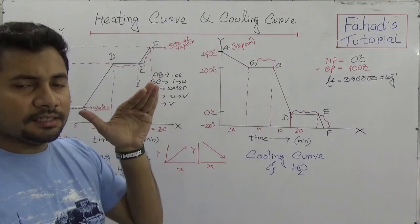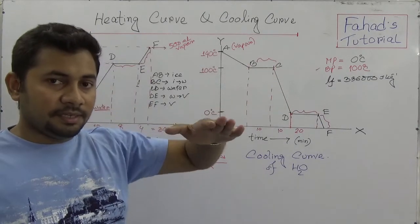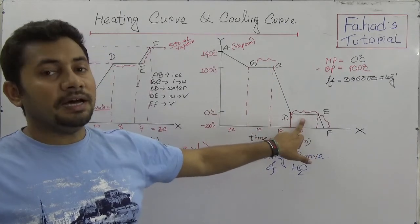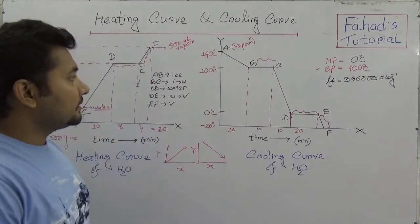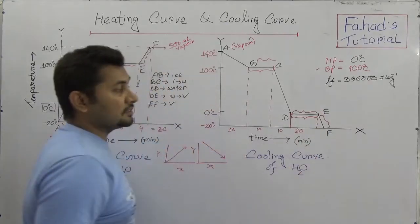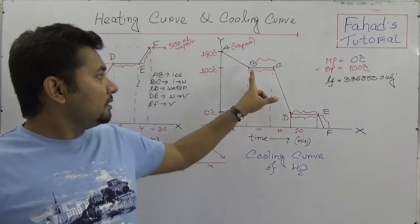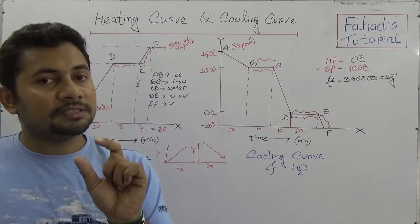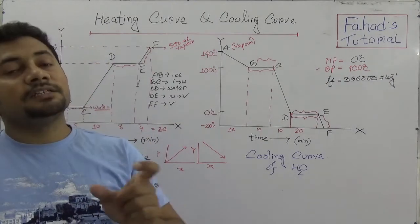So on the cooling curve: A to B is vapor to liquid, B to C is fully liquid, C to D also liquid but turning into ice, D to E is ice forming, and E to F is fully ice. The key principle is: when temperature is changing, the state is not changing, and when temperature is not changing, the state is changing — from vapor to liquid and then from liquid to ice.